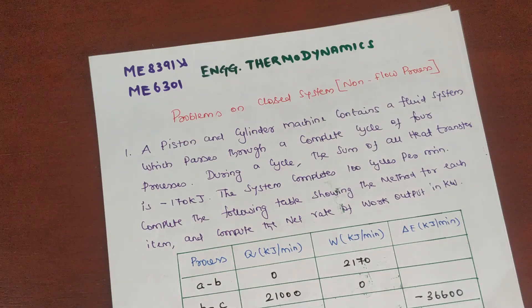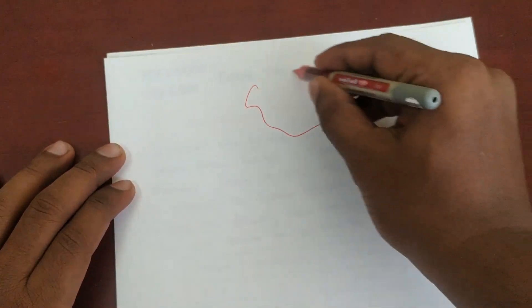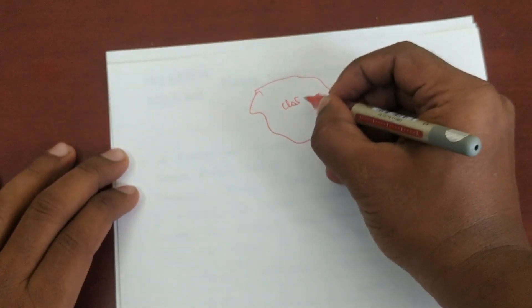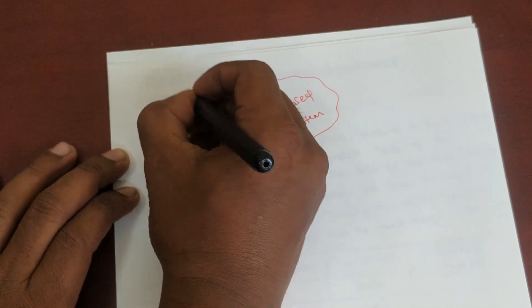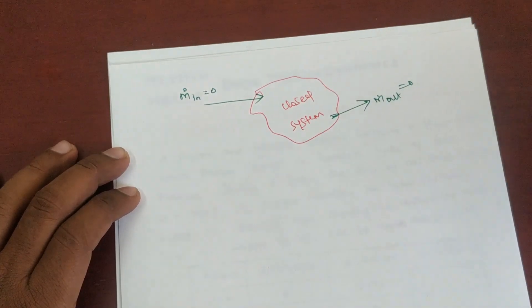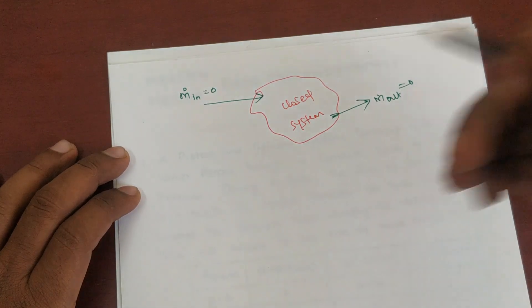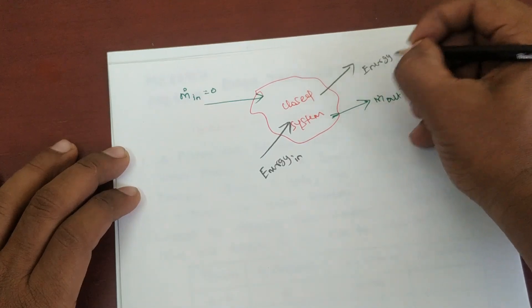Hi, welcome to PM Lectures. In-class problems on closed systems. Closed systems — another name is the non-flow process. For a closed system, mass in is equal to zero, mass out is equal to zero. So only energy interactions, that is energy in and energy out.